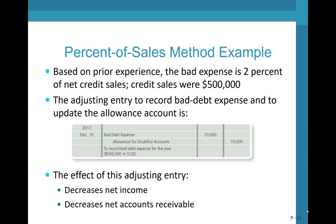Under the percentage of sales method, we compute bad debt expense as a percentage of net credit sales based on prior experience. In this example, the business expects 2% of net credit sales to be uncollectible, and credit sales were $500,000. $500,000 times 2% gives $10,000. So we'd record a bad debt expense of $10,000 and increase the allowance for doubtful accounts — which has a normal credit balance — by $10,000. The effect is to decrease net income and decrease net accounts receivable.